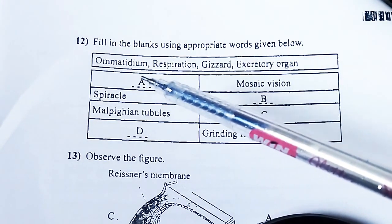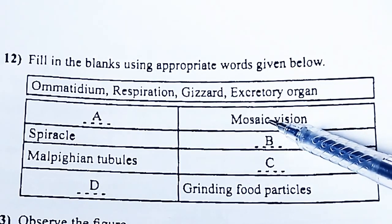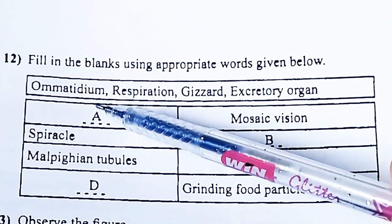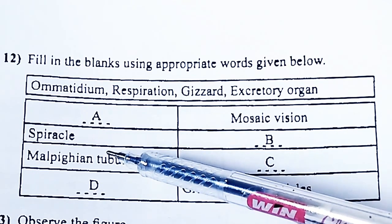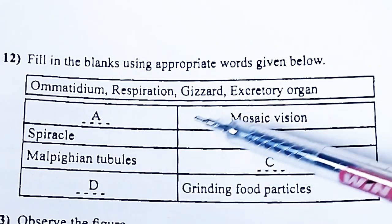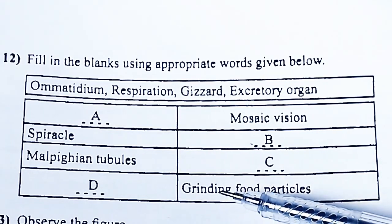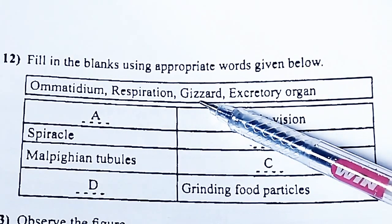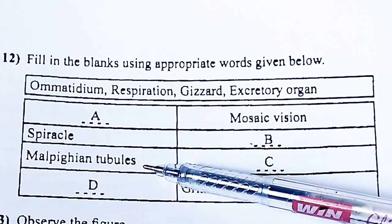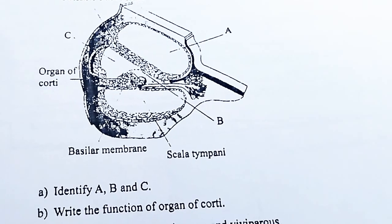Fill in the blanks using appropriate words. Mosaic vision is the type of vision in insects. Spiracle is the organ for respiration. Malpighian tubules are the excretory organ. Gizzard is used for grinding food particles.